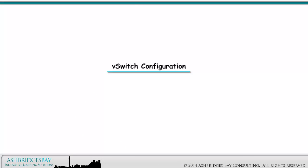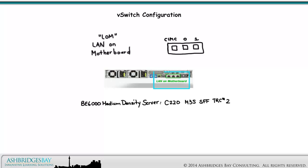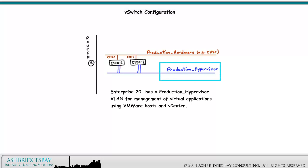The next thing to do is vSwitch configuration. Enterprise 20 uses the BE6000 medium density server C220M3SSFF Tested Reference Configuration No. 2. This TRC uses only the LOM for networking. Other TRCs supplement the LOM card with a Quad Gig eCard. Enterprise 20 has a Production Hypervisor VLAN for management of our virtual applications using VMware hosts and vCenter. This VLAN is routed, and we can access it from anywhere in the enterprise depending on restrictions we impose on inter-VLAN traffic.